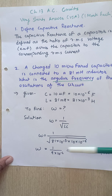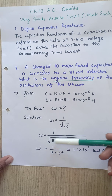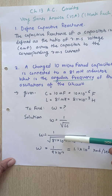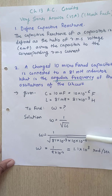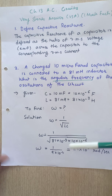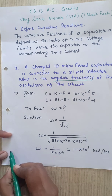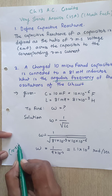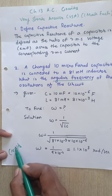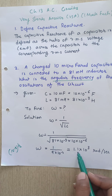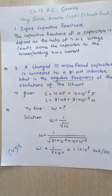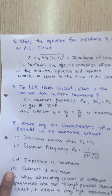Substituting: 81 is the square of 9. The exponent becomes −3 plus (−6) equals −9, and square root gives 10⁻⁴·⁵, so we get 10⁻⁴ under the root giving 10 to the power −4. Therefore ω equals 1 divided by (9 × 10⁻⁴), which is approximately 1.1 × 10³ rad per second.